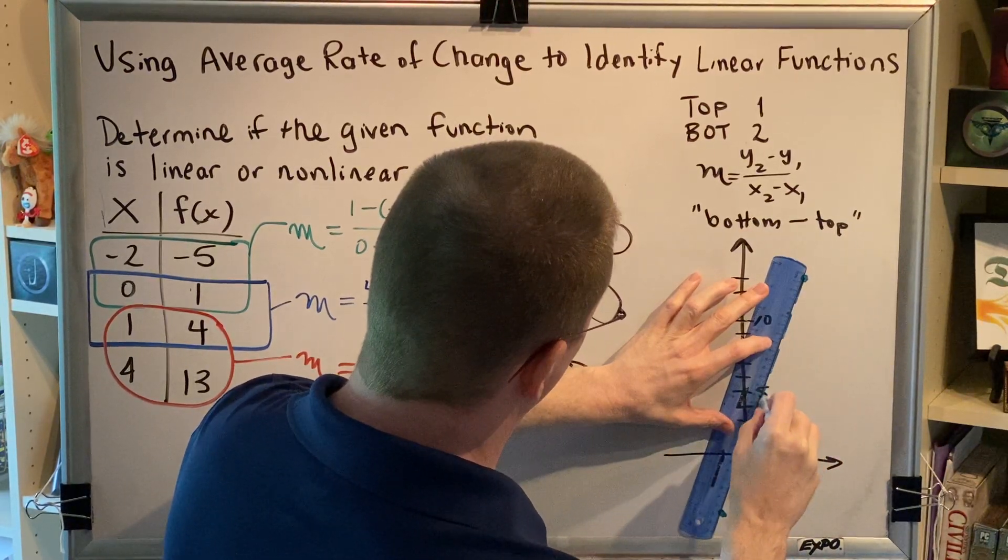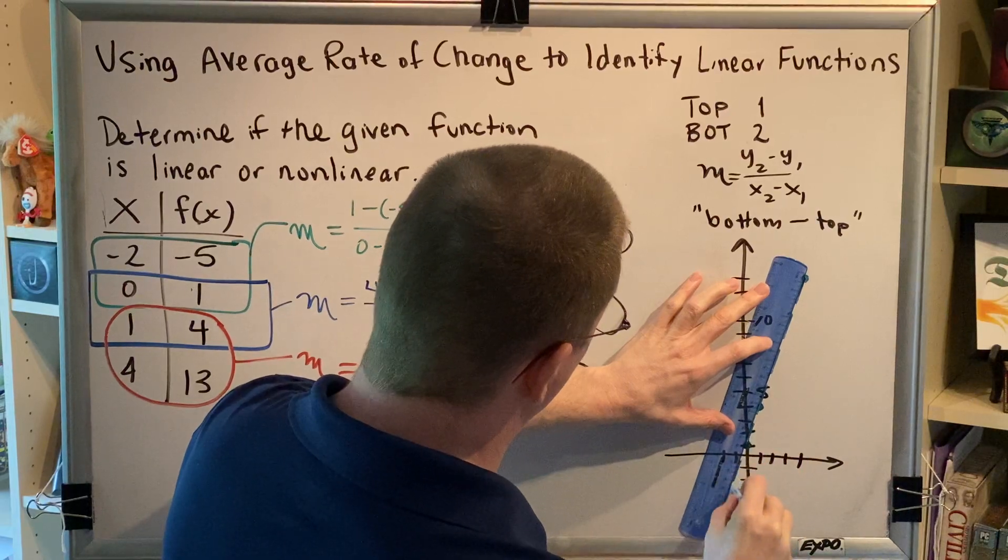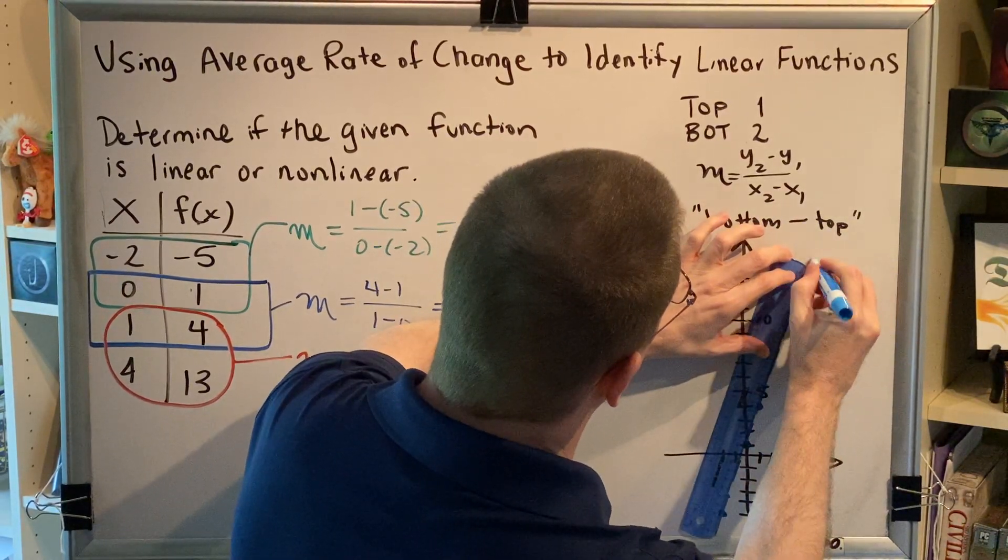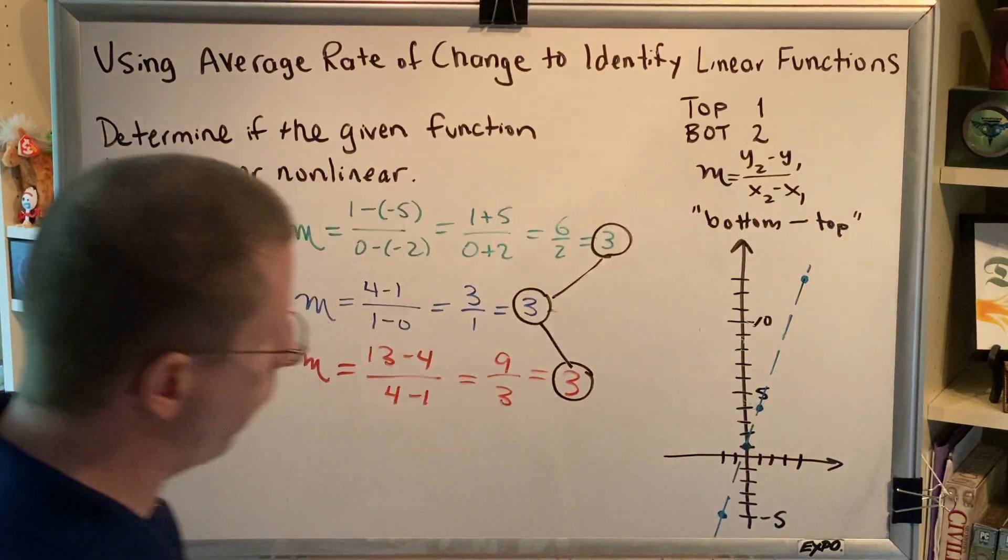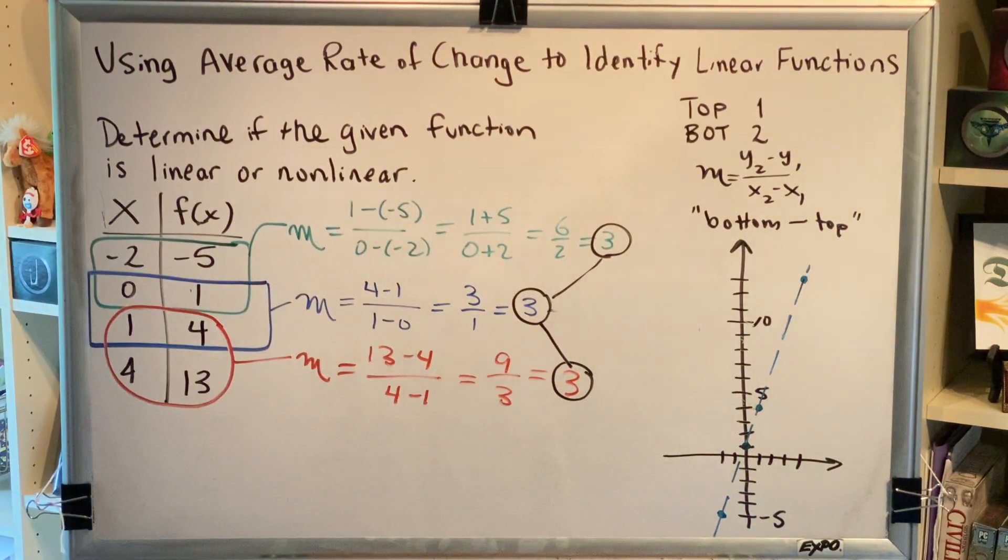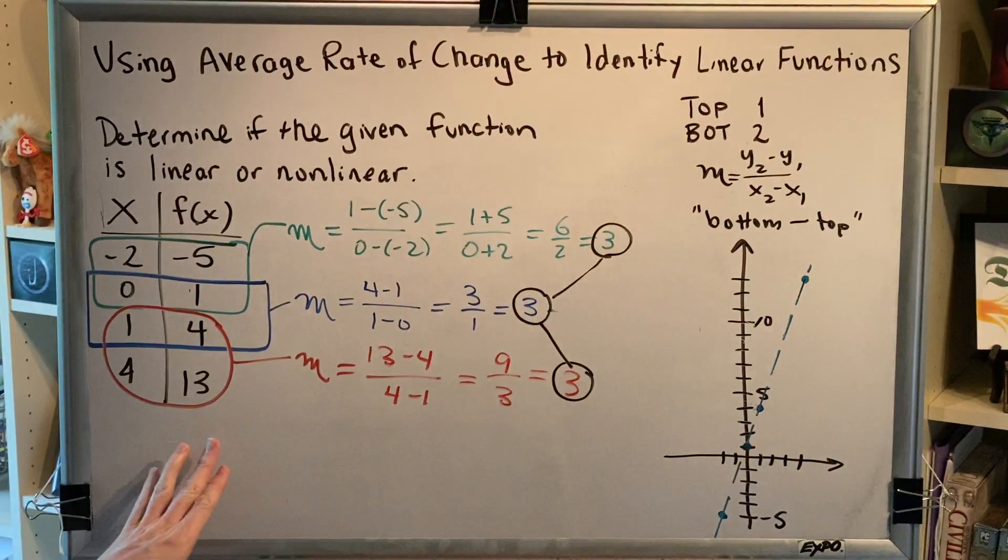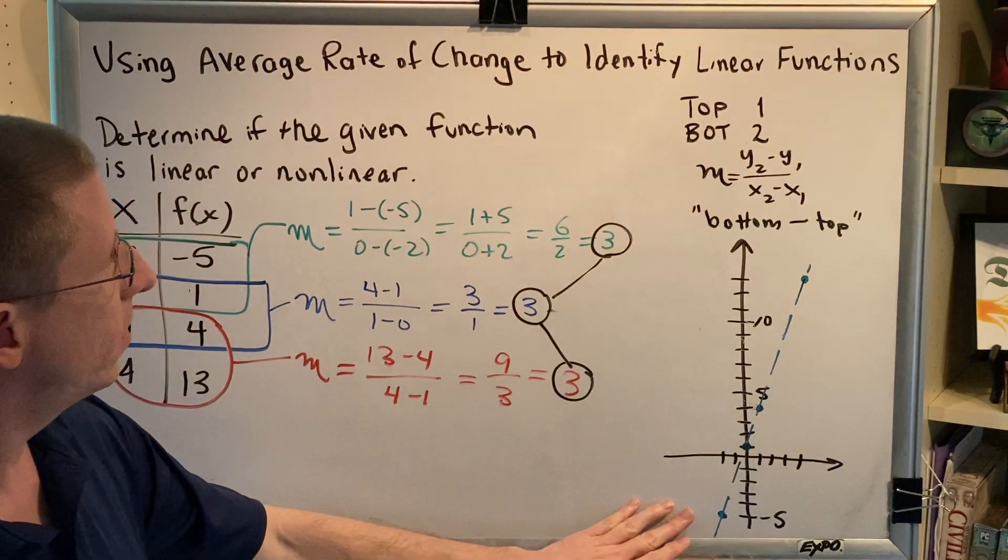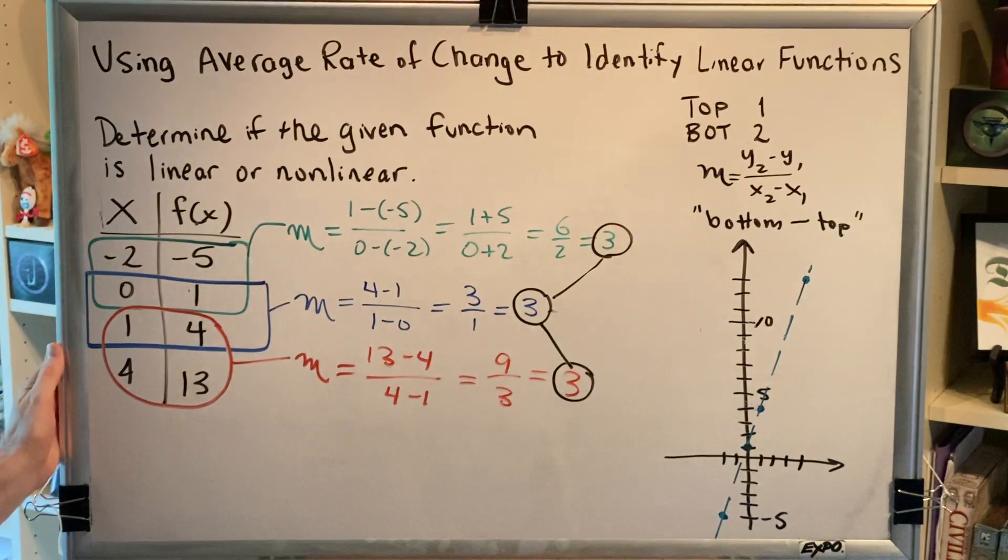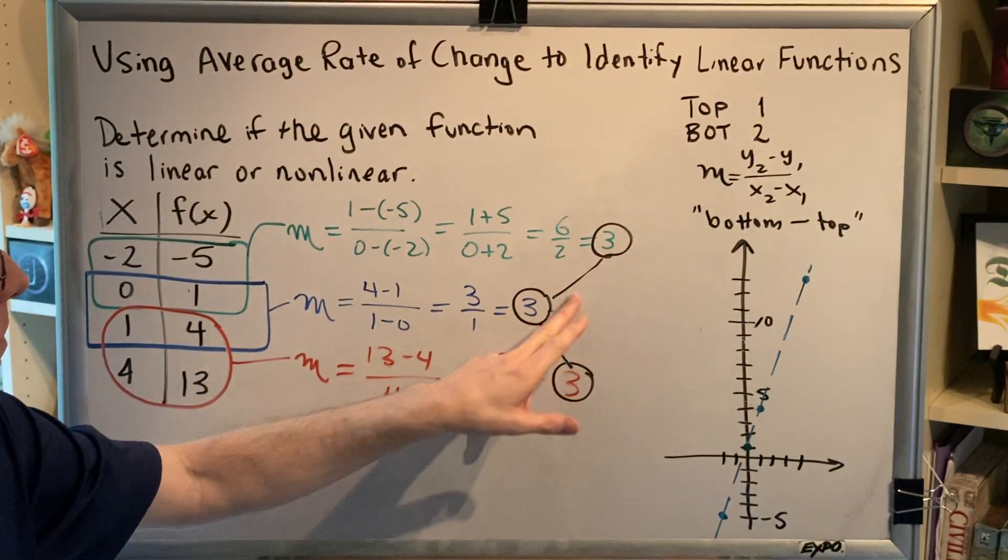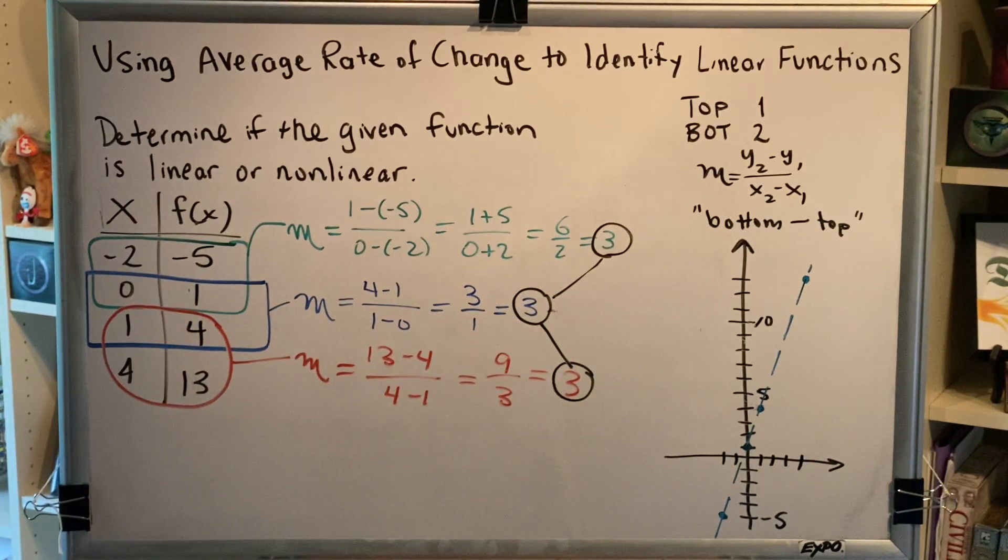I'm drawing this as a dashed line because the line itself does not represent the function. Only the points represent the function. But what we're trying to do is state that the function is a linear function because a straight line goes through all four of those points. So we can see very clearly that this is a linear function by looking at the graph, but algebraically by computing the slope between each adjacent pair of points and showing that that value is the same.